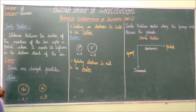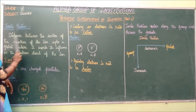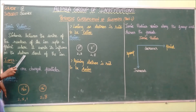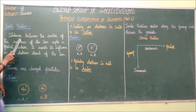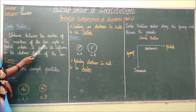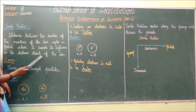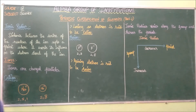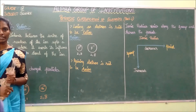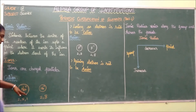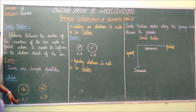Now let us discuss ionic radius. Ionic radius is the distance between the centre of the nucleus of the ion up to the point where it exerts its influence on the electron cloud of the ion. First we must know what is meant by an ion — ions are charged particles.